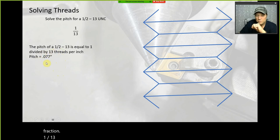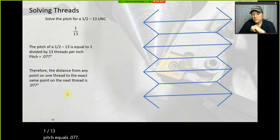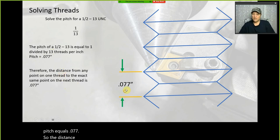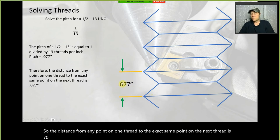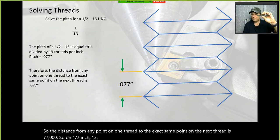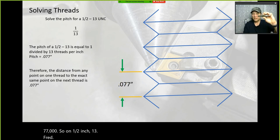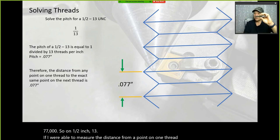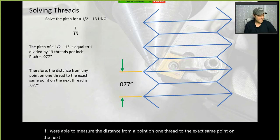Pitch equals 0.077. The distance from any point on one thread to the exact same point on the next thread is 77 thou. So on a half-inch 13 thread, if you could measure from a point on one thread to the same point on the next thread, it would be exactly 77 thou.